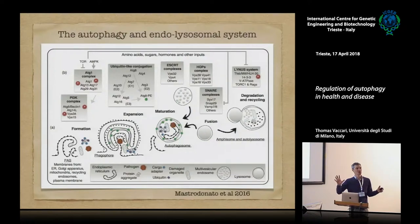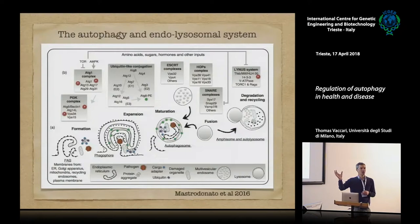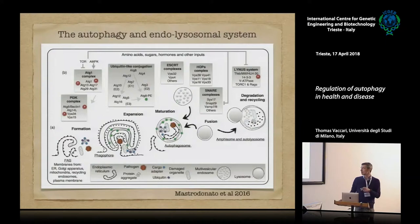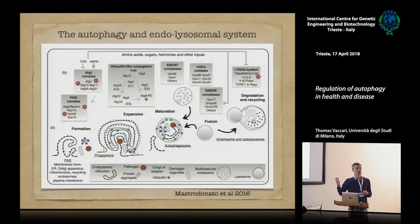The autophagosome needs to merge with what I'll call the recycling bin of the cell — the lysosome. The lysosome is an acidic organelle containing proteases, lipases, and enzymes that chop down all these materials to minimal components that can be recycled. For instance, when proteins are degraded you can recover amino acids. At the end of the process, all these components are turned into nutrients to provide to the cell.